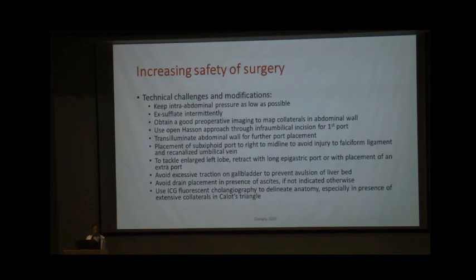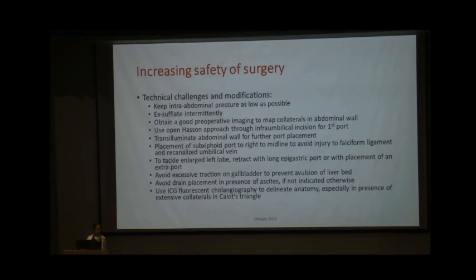Technical modifications to improve surgical safety include: using cross-sectional imaging as a roadmap to avoid abdominal wall collaterals during port placement; keeping pneumoperitoneum to a minimum with intermittent exsufflation to reduce ischemic effects on liver and kidneys; open approach for port placement; liberal use of energy devices such as harmonic scalpel or LigaSure; and ICG fluorescent technology for biliary mapping, which is validated in acute cholecystitis and is likely beneficial in cirrhosis. Drains are generally avoided due to higher risk of ascending infection.